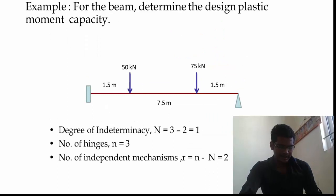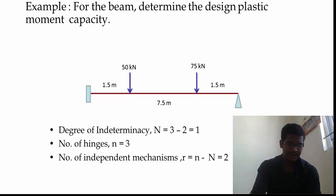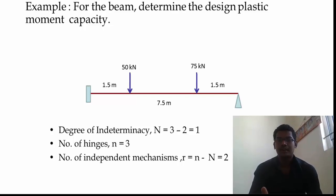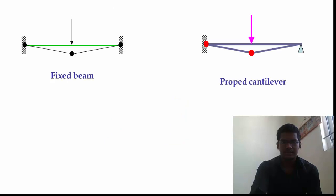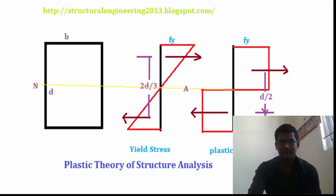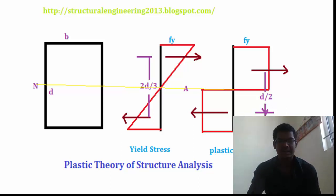Plastic analysis is a method of designing a steel structure having ductile material. In plastic analysis, the stress developed in the steel structure is the yield stress FY — typically 250 MPa for common structural steel. The stress diagram is always rectangular compared to the elastic case, where compression and tension are equal about the equal-area axis rather than the centroidal axis. This approach is more economical because 100% of the material is utilized.